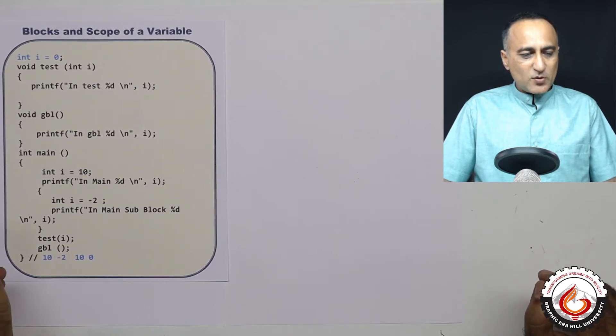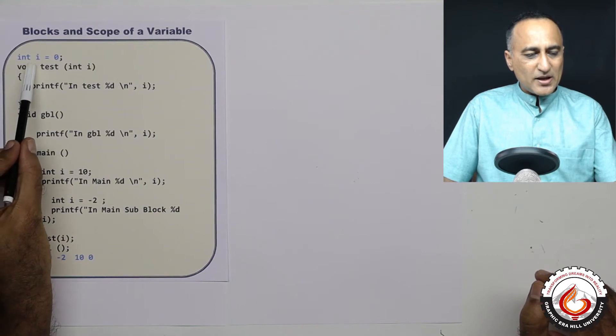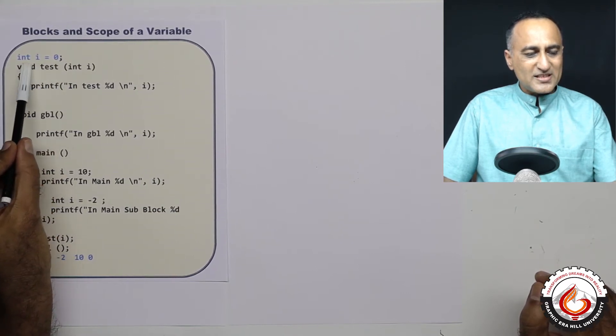So let's first try to understand the code. I have declared an integer variable i is equal to zero, this is a global variable.